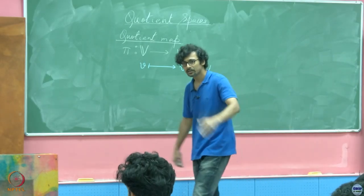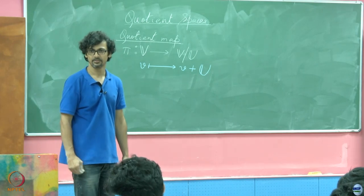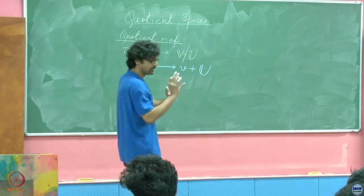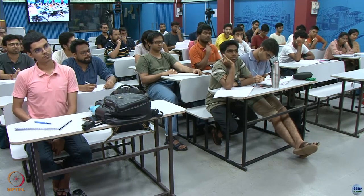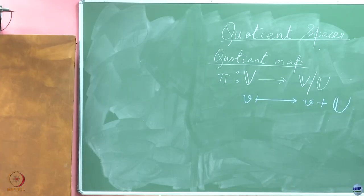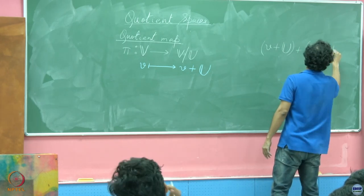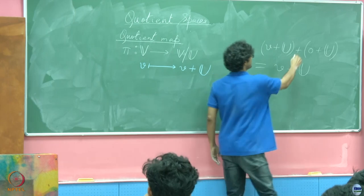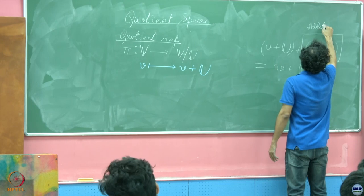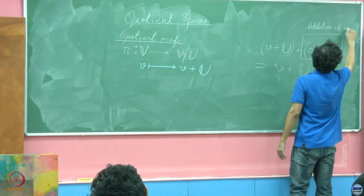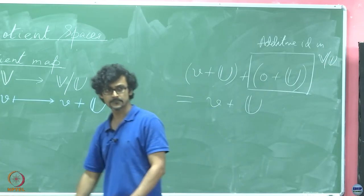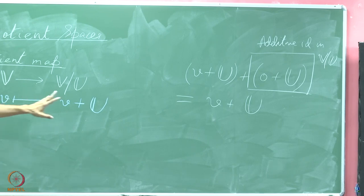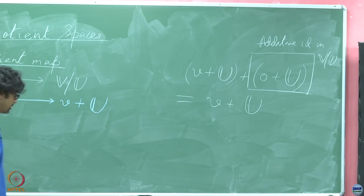Before we get deeper into this, what is the additive identity with respect to vector addition in the quotient space? Student: U. Why do you say that? See, what do you need for the additive identity? Just think back on what is the additive identity? Whenever you add the additive identity, you must get back the same object. So, if you take V plus U plus 0 plus U, do not you get V plus U back. So, this qualifies that this is indeed additive identity in V quotiented by U. It is very important to understand that this is the additive identity in this vector space.